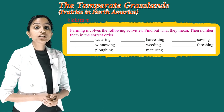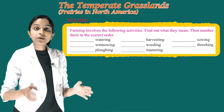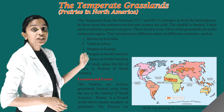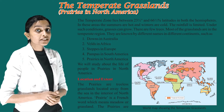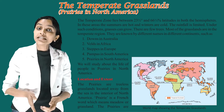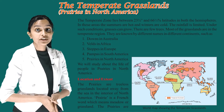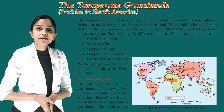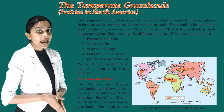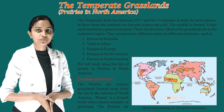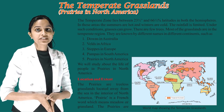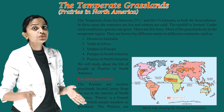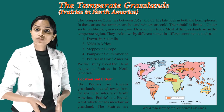The temperate zone lies between 23 and a half degrees and 66 and a half degrees latitude in both hemispheres. In these areas, the summers are hot and winters are cold. The rainfall is limited, and under such conditions grasses can grow. There are few trees.